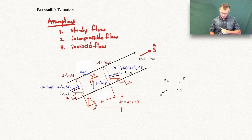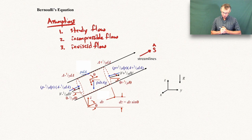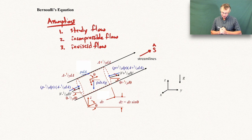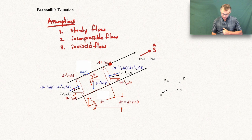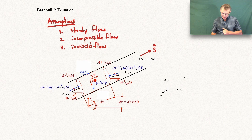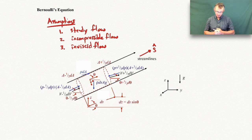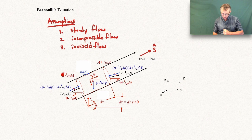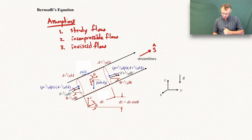This little control volume is very short — it has a length ds in the streamline direction. In the middle, the cross-sectional area is A. Moving in the positive s-hat direction by a small distance, the area of the right face will be A plus one-half dA, and on the bottom left it'll be A minus one-half dA. If the total change in area from left to right is dA, then half of that change occurs from center to right — hence the one-half. The angle of this control volume with respect to the horizontal is theta.